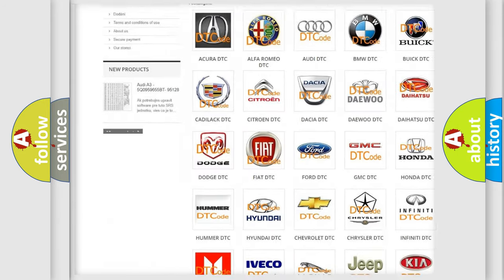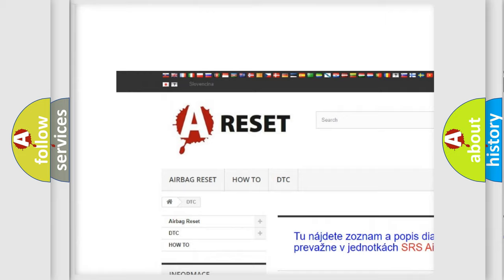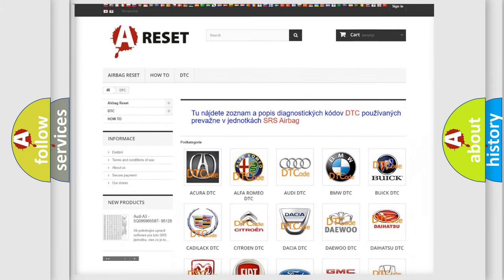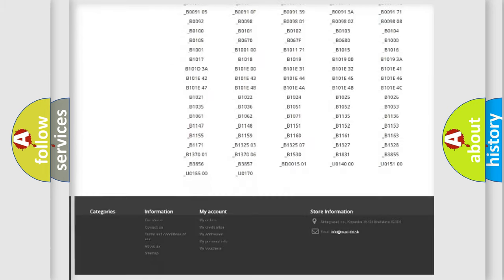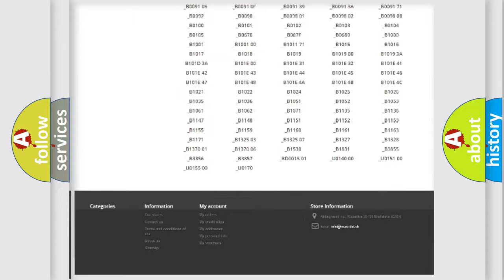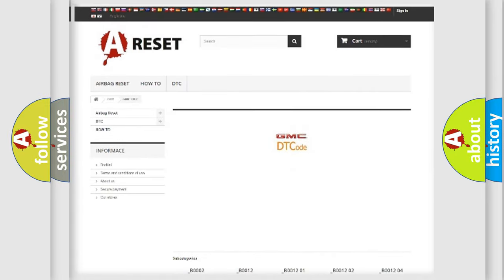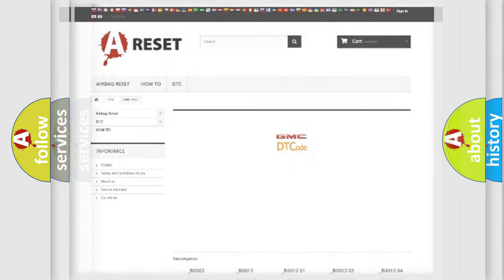Our website airbagreset.sk produces useful videos for you. You do not have to go through the OBD-II protocol anymore to know how to troubleshoot any car breakdown. You will find all the diagnostic codes that can be diagnosed in GMC vehicles and many other useful things.